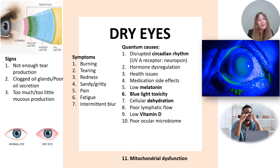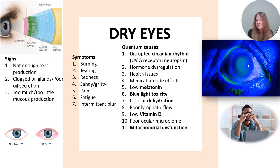Overall, our eyes require mitochondria to function well. Mitochondrial cells are found in all parts of the eye, and when mitochondrial cells get damaged, the optimal functioning of those cells goes down.